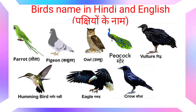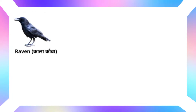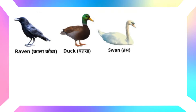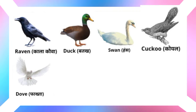Crow means Kowa. Sparrow means Goreya. Raven means Kala Kowa. Duck means Batak. Swan means Huns. Cuckoo means Coil. Dove...